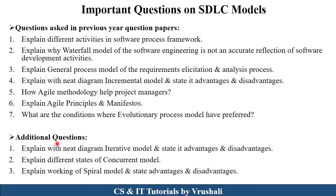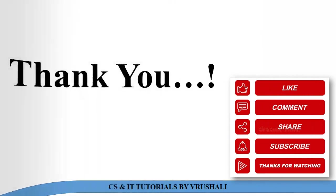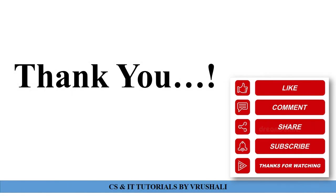Some additional questions include: explain with a neat diagram the iterative model with advantages and disadvantages, explain different states of the concurrent model, and explain the working of the spiral model with advantages and disadvantages — all for seven to eight marks. You have to prepare all these questions from your exam point of view. Thank you, keep learning.